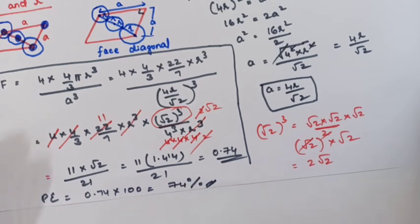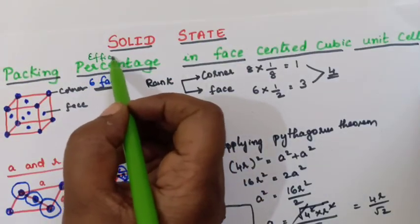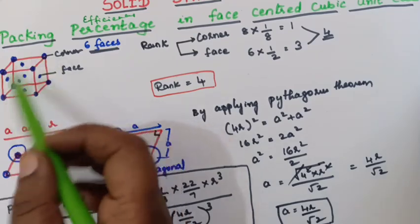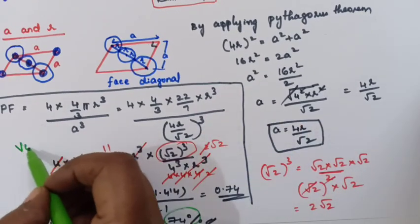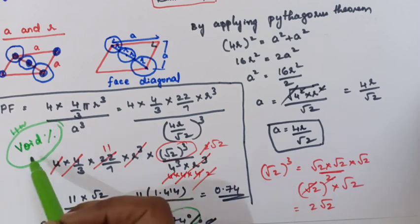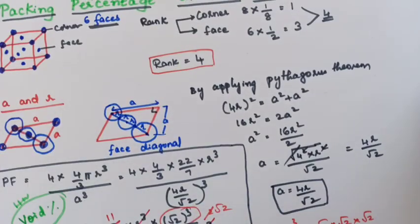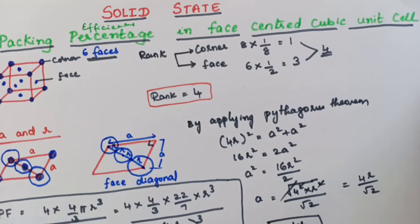So students, here is a homework for you. Packing efficiency is found to be 74%, meaning 74% of the volume is occupied by atoms. Now I want you to calculate the void percentage — void means empty space. So what is the volume of empty space present in the FCC unit cell? Find out and write in the comment box. I will meet you in the next video. Bye-bye.